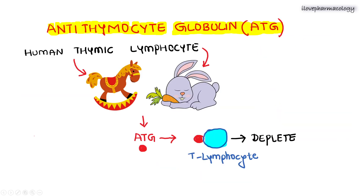Antithymocyte globulin (ATG) is obtained by administering human thymic lymphocytes into a horse or rabbit. Blood is collected from the horse or rabbit and purified to obtain ATG. This antithymocyte globulin binds with T-lymphocytes and depletes T-lymphocyte activity.